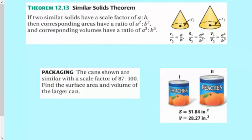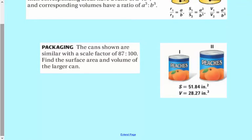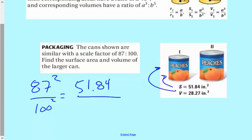The cans shown are similar with a scale factor of 87 to 100. Find the surface area and the volume of the larger can. That's a really annoying scale factor. For finding the surface area, I'm going to do 87 squared over 100 squared equals, and they give us these values here, so 51.84 over surface area.